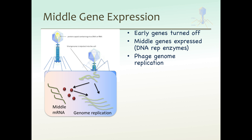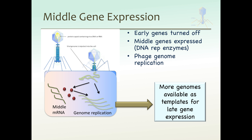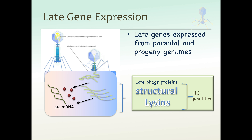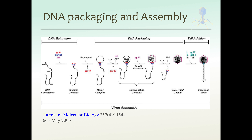Then there's middle gene expression. Many of these genes encode enzymes involved in genome replication. Now we have more genomes available as templates for late gene expression. Late gene expression leads to all the structural proteins made in order to assemble the particles. Finally, the very last things expressed are the lysins needed to break through the cell membrane and peptidoglycan and release all the phage particles.